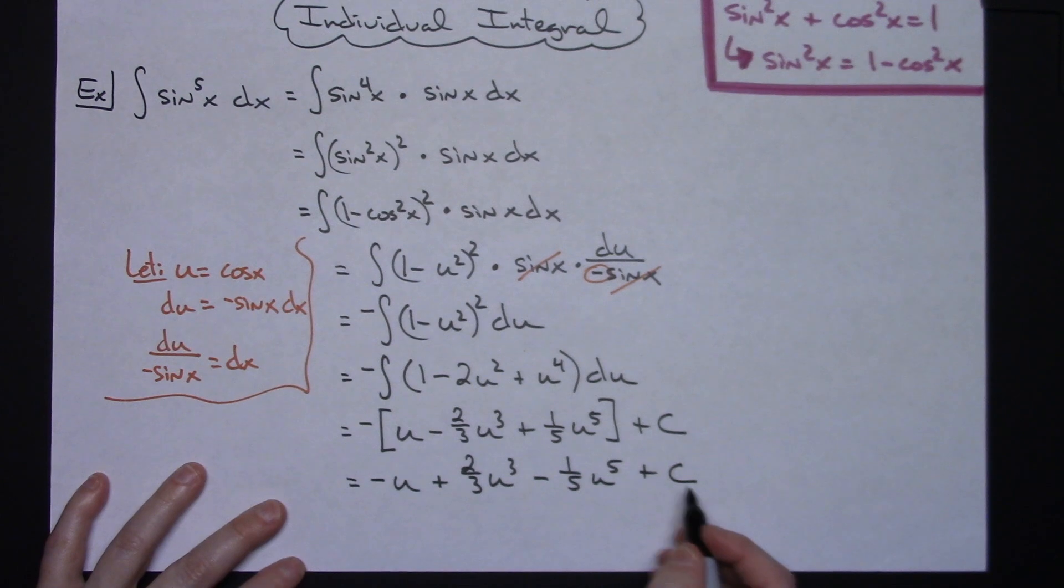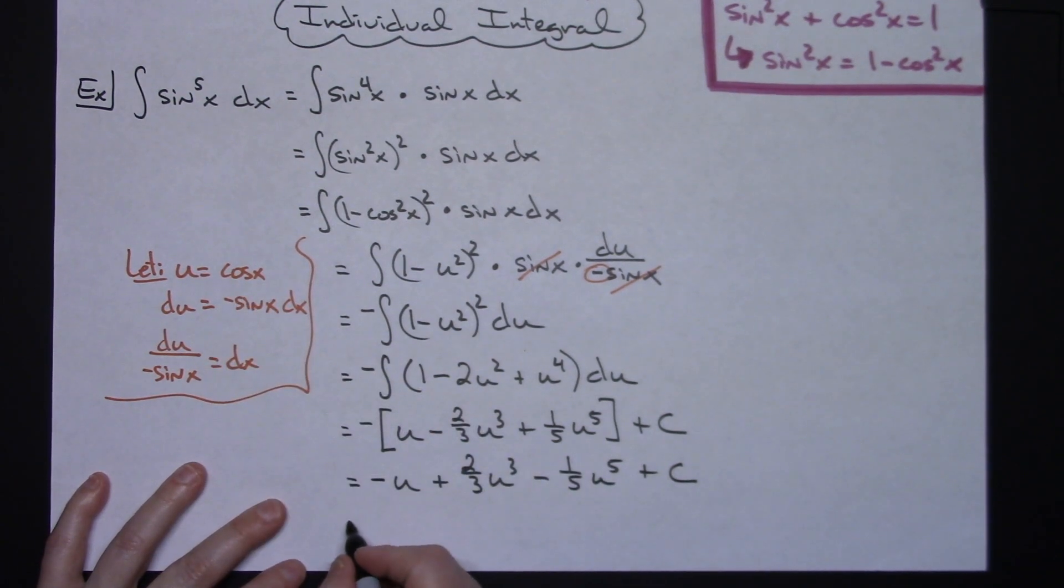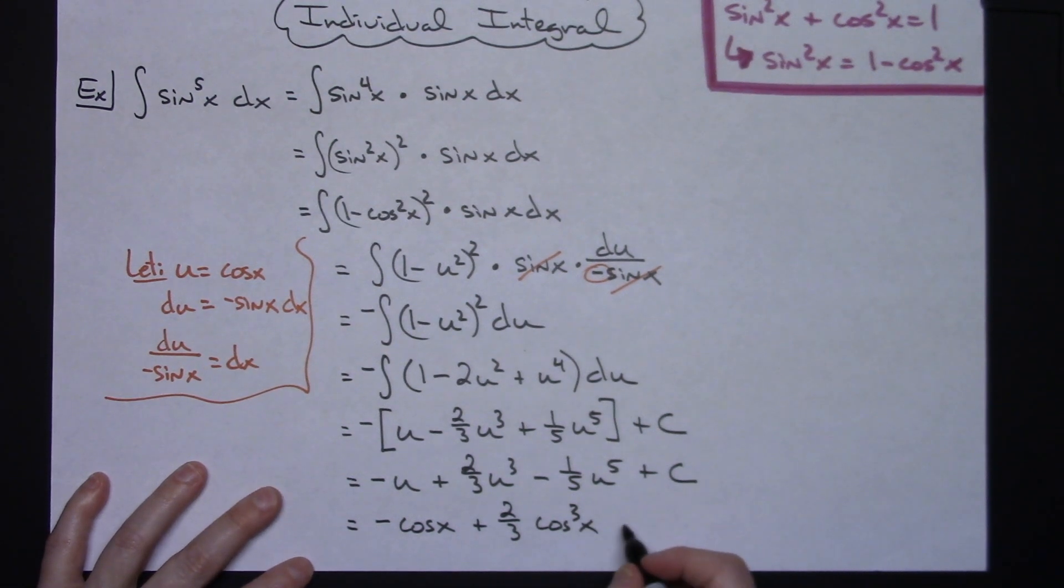And then replacing the u with what we originally said it's going to be. So we'll have minus cosine x plus 2 thirds cosine x to the third power minus 1 fifth cosine x to the fifth power and then plus c.